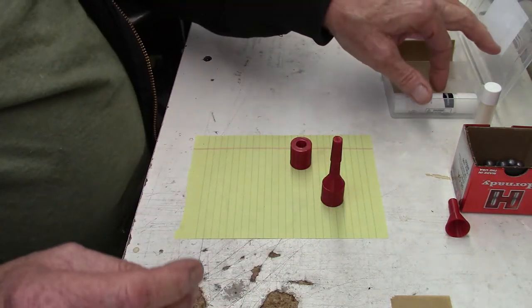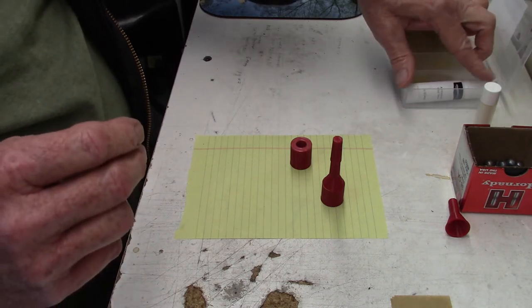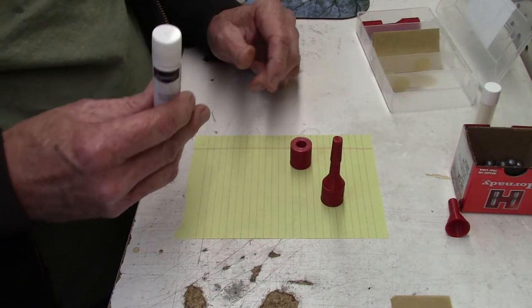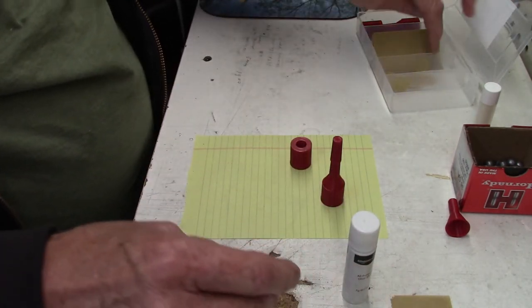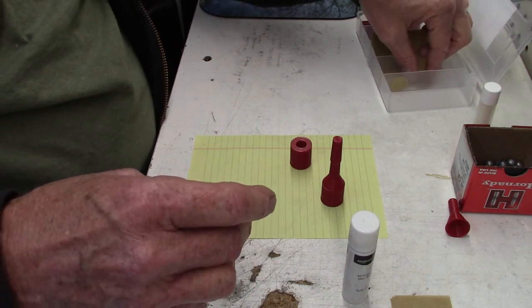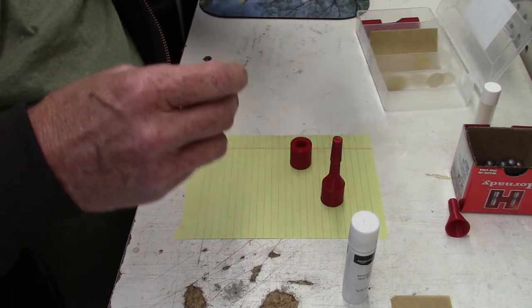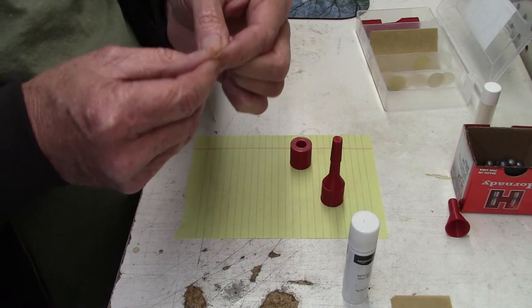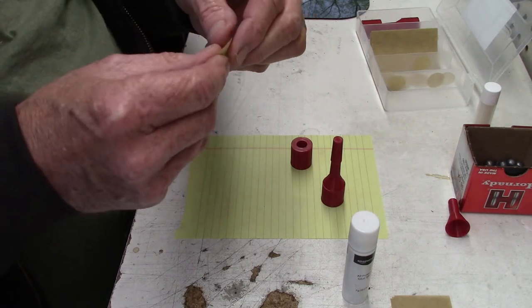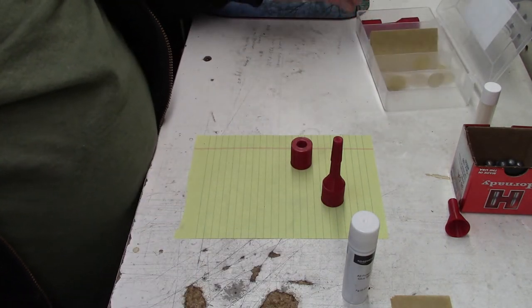He also gives you a glue stick, some bullet lube, pretty much a kit ready to go. He supplies these little cutout discs made from cigarette papers. I think the brand is Raw. They're inch and a quarter size, and the discs are three quarter diameter.